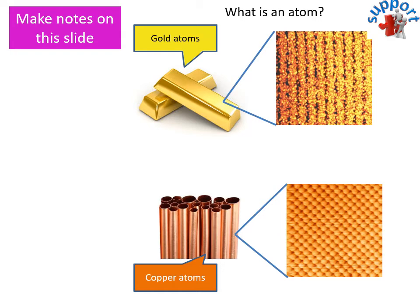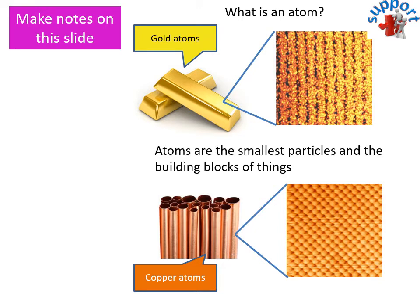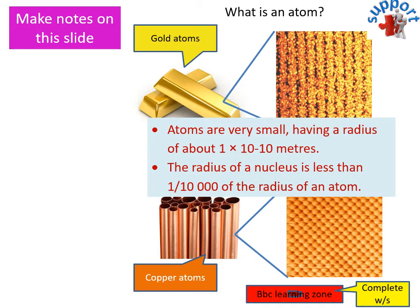Going back to what is an atom, gold and copper are both examples of elements. They contain only one type of atom. You can see in this picture, if you zoom in, you'd see only copper atoms and only gold atoms in there. They're the smallest particles and the building blocks of things. There's a little video there you can watch. They're very small and have a radius of about 10 to the power of minus 10 meters. That's really, really small.